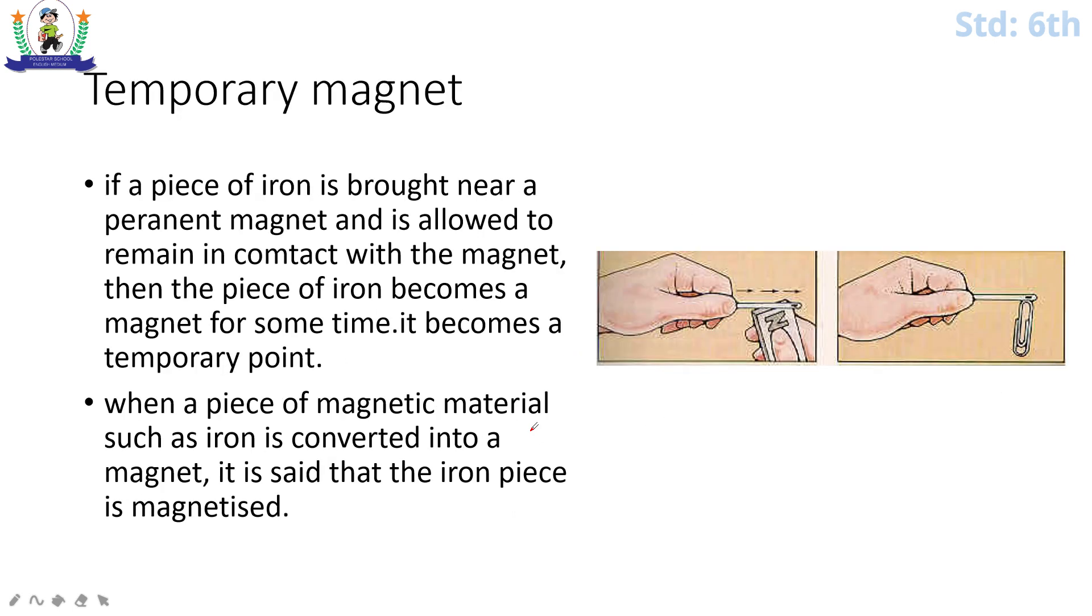Temporary magnet. If you want to make a magnet, you can make a temporary magnet. How? Let's see. If a piece of iron is brought near a permanent magnet and is allowed to remain in contact with the magnet, then the piece of iron becomes a magnet for some time. It becomes a temporary magnet.